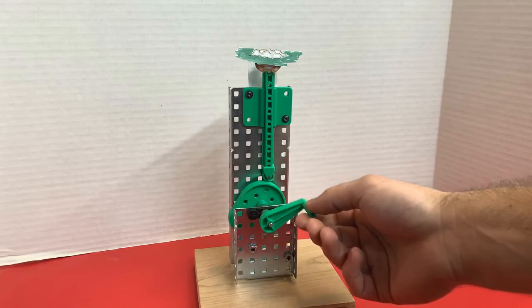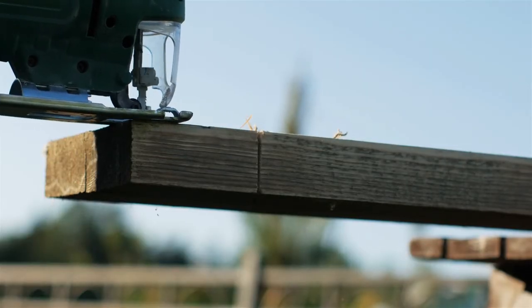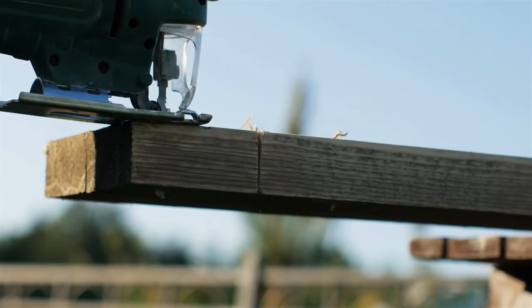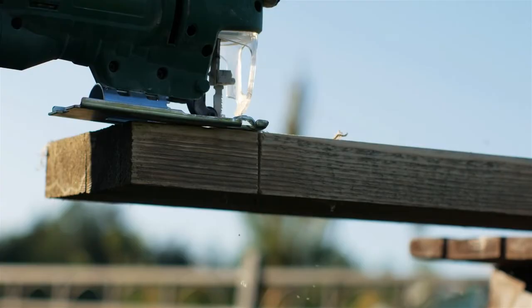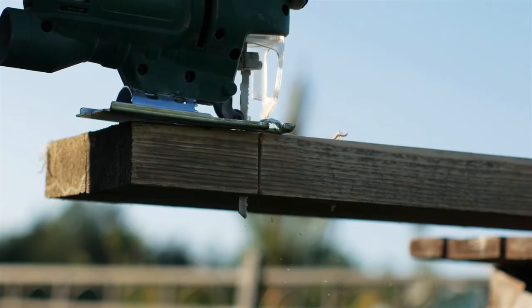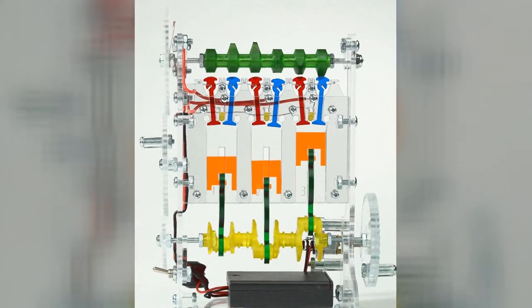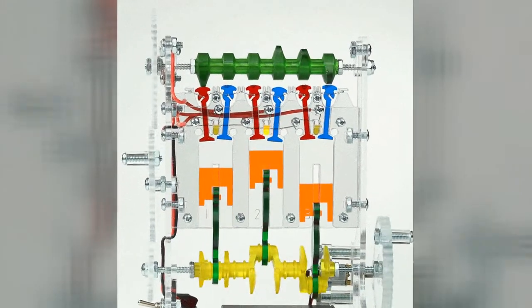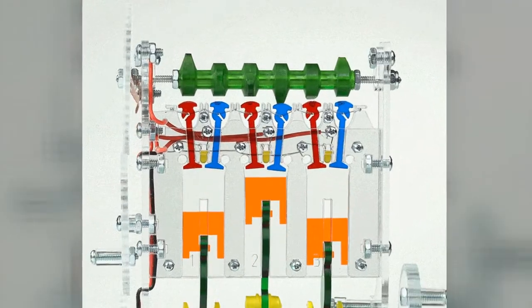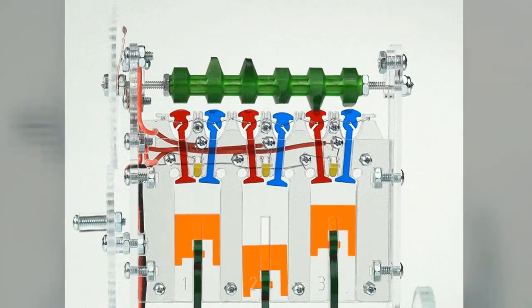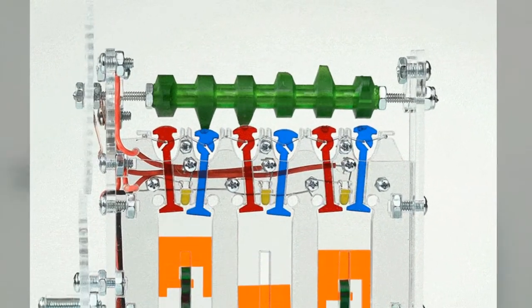Some common uses for the cam and follower are in a reciprocating saw, where the spinning motor must produce a back-and-forth motion in the blade, or in a four-stroke engine to control the opening and closing of valves that allow fuel to enter the cylinder and exhaust gases to leave.